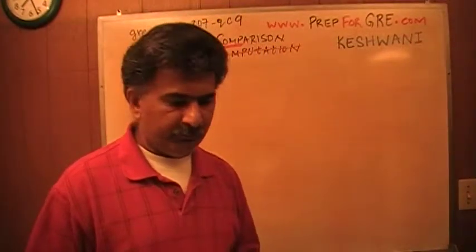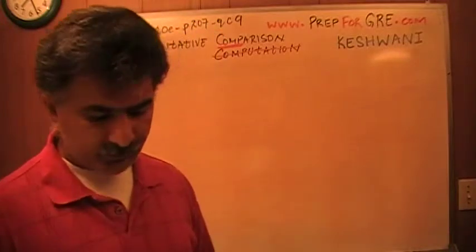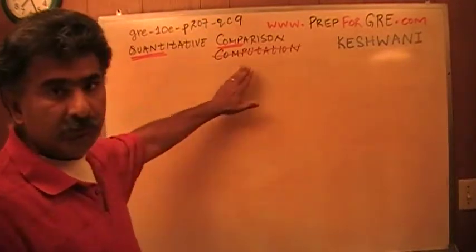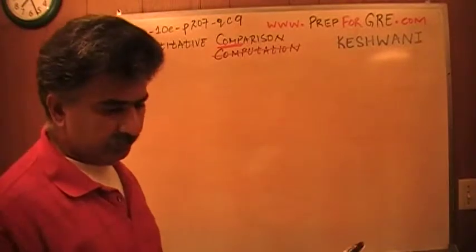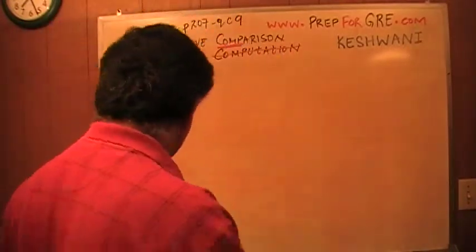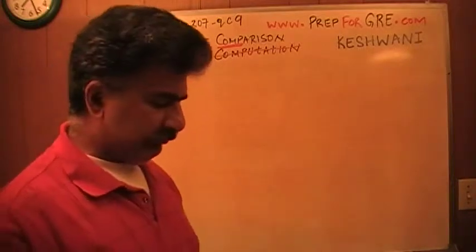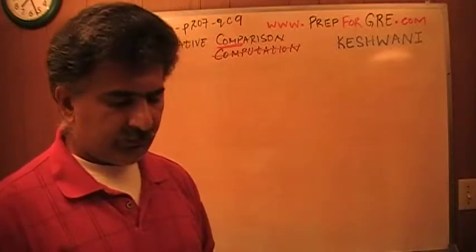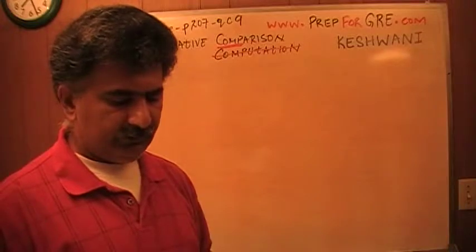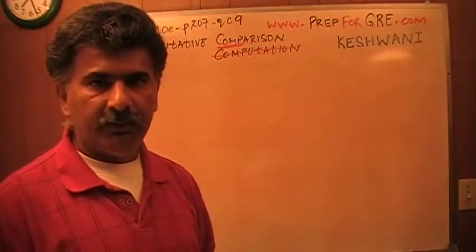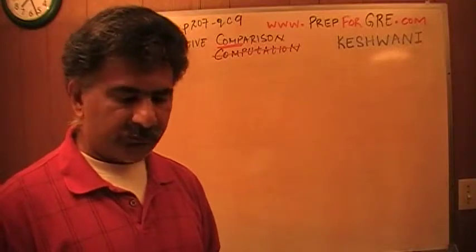The problem I am about to solve appears in exam number 2 on page 207, quantitative comparison question number 9. Let's take a look at it. It says 3 ships, X, Y and Z. You must have the book in front of you, turn to page 207, read the problem with me.